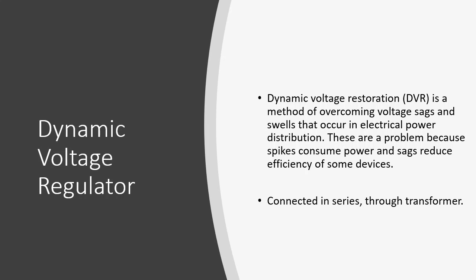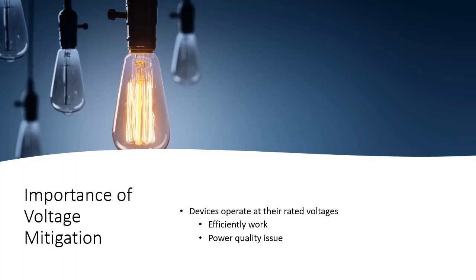We have different techniques to restore voltages. One technique is the Dynamic Voltage Restorer, or DVR. Another technique involves FACTS devices — Flexible AC Transmission Systems. DVR is a method of overcoming voltage sags and swells that occur in electrical power distribution systems. These problems matter because voltage spikes and drops consume power and reduce the efficiency of devices. A DVR is always connected in series through a transformer.